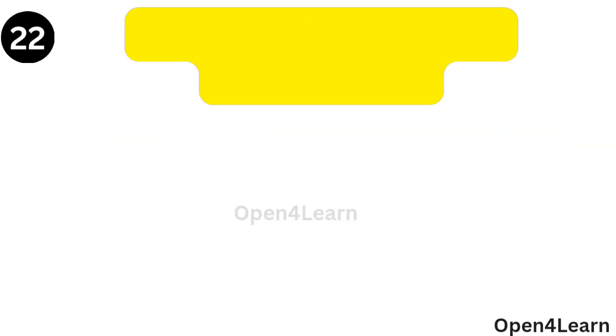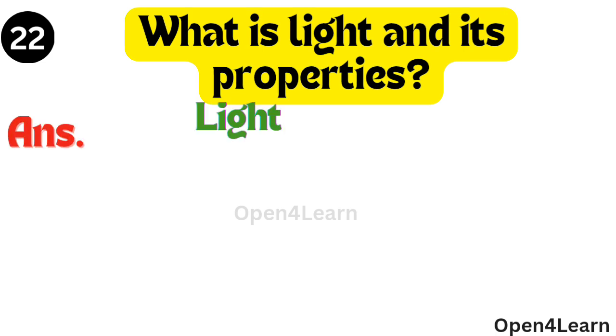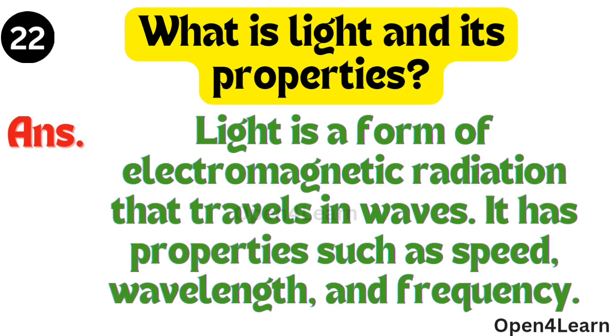Question, what is light and its properties? Answer, light is a form of electromagnetic radiation that travels in waves. It has properties such as speed, wavelength and frequency.